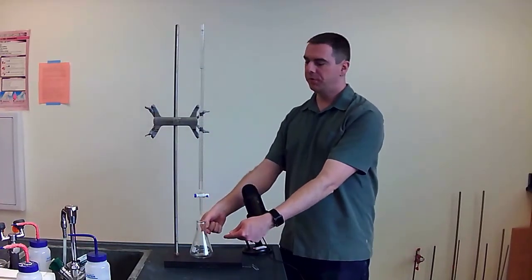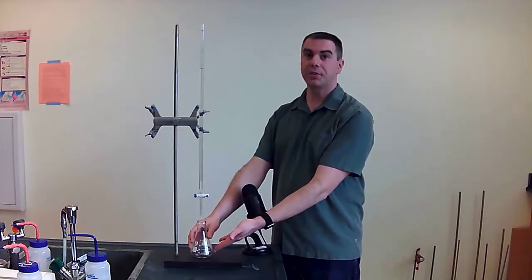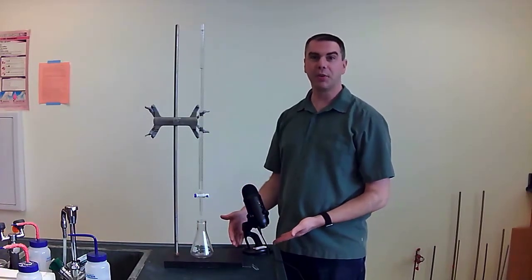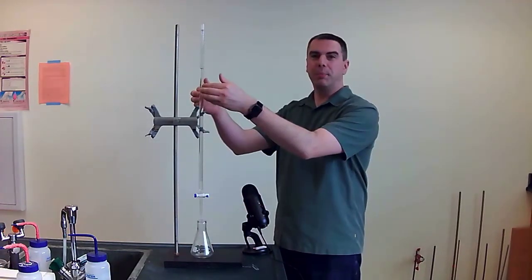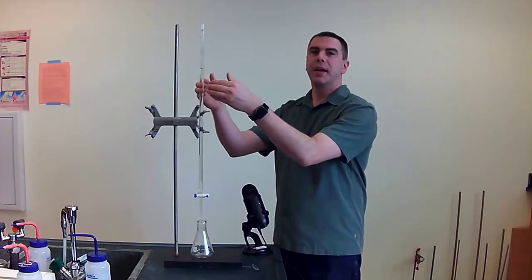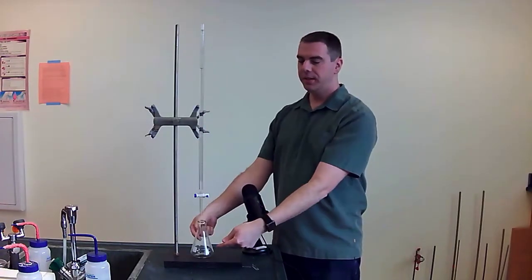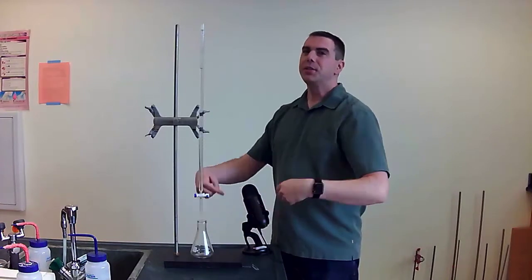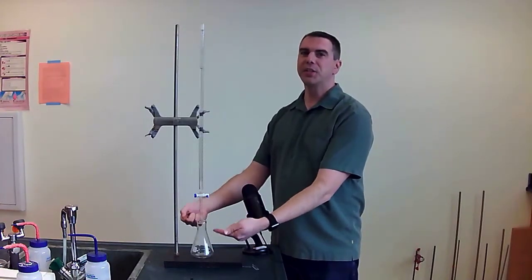You'll have a reactant down here in, for example, an Erlenmeyer flask sitting next to my giant microphone. You have a reactant down here and you have the other reactant up here, say A and B. You're trying to add just the right amount of B into your flask until reactant A is entirely consumed.